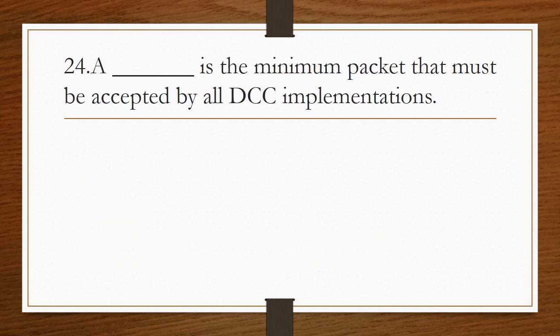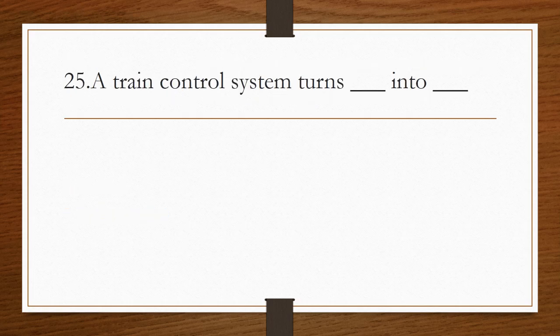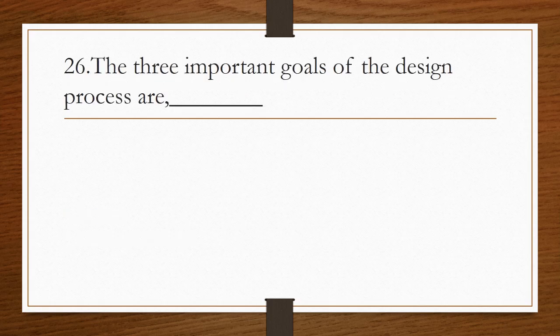A blank is the minimum packet that must be accepted by all DCC implementations. The answer is baseline packet. A train control system turns commands into packets. The three important goals of the design process are time to market, design cost, and quality.